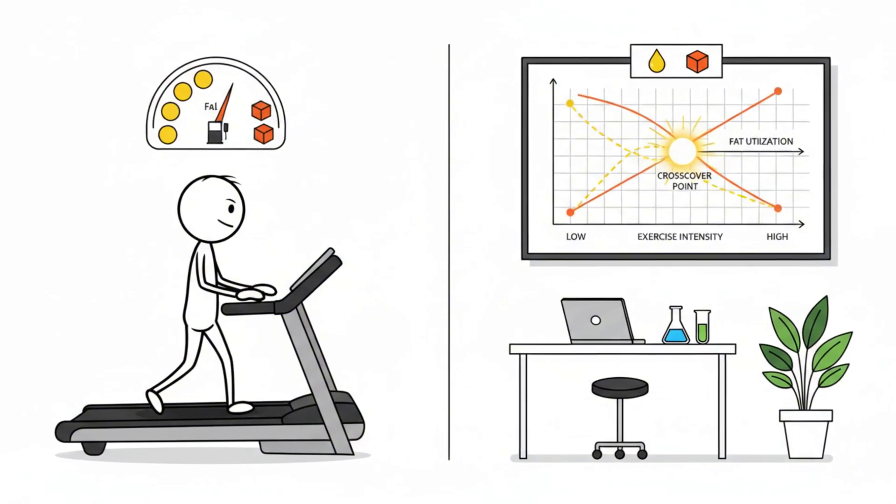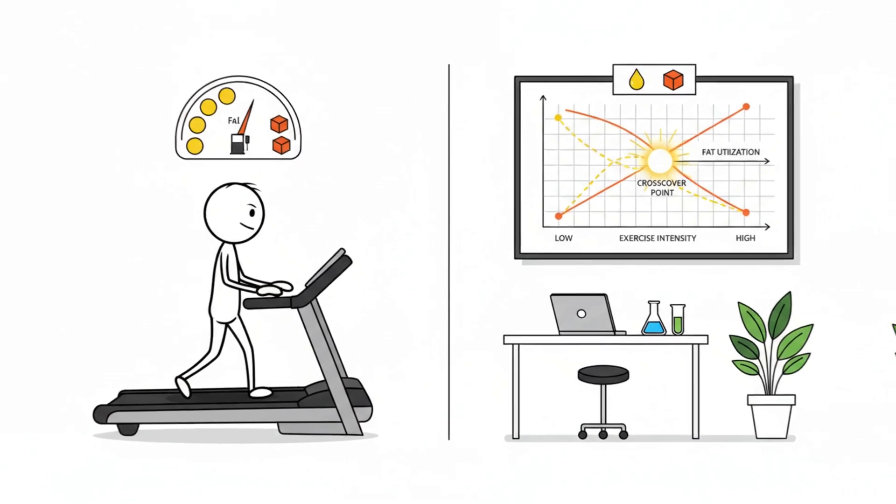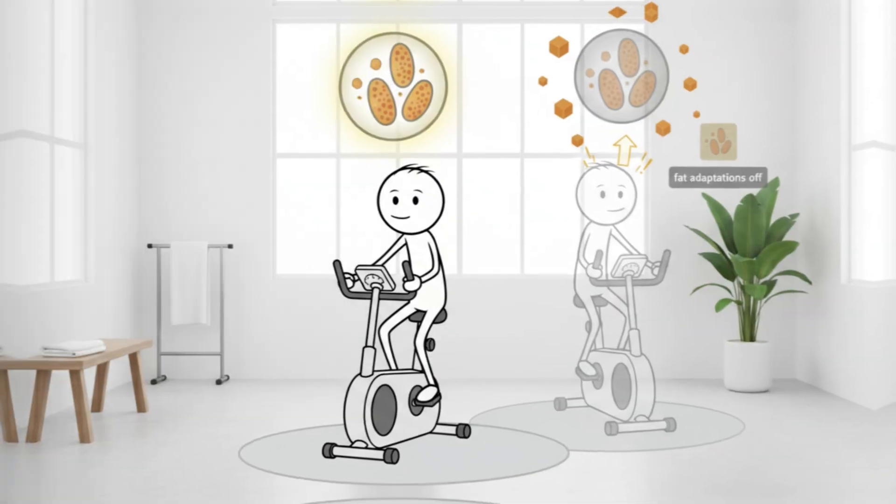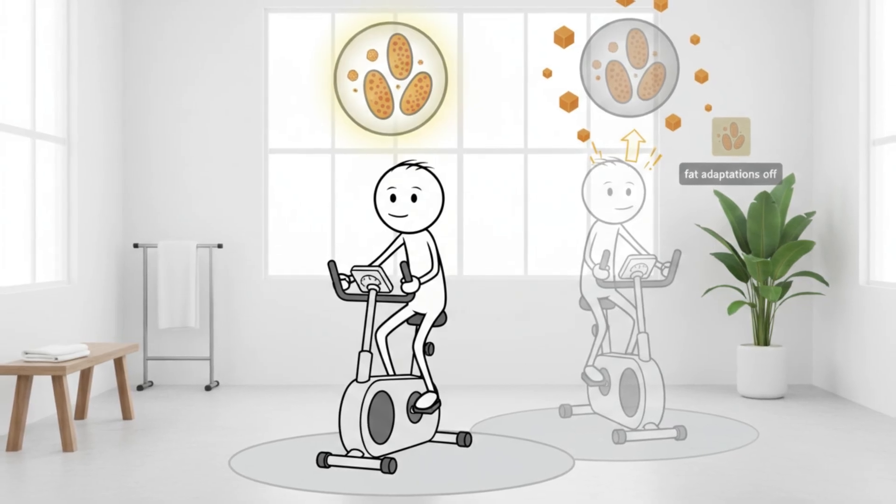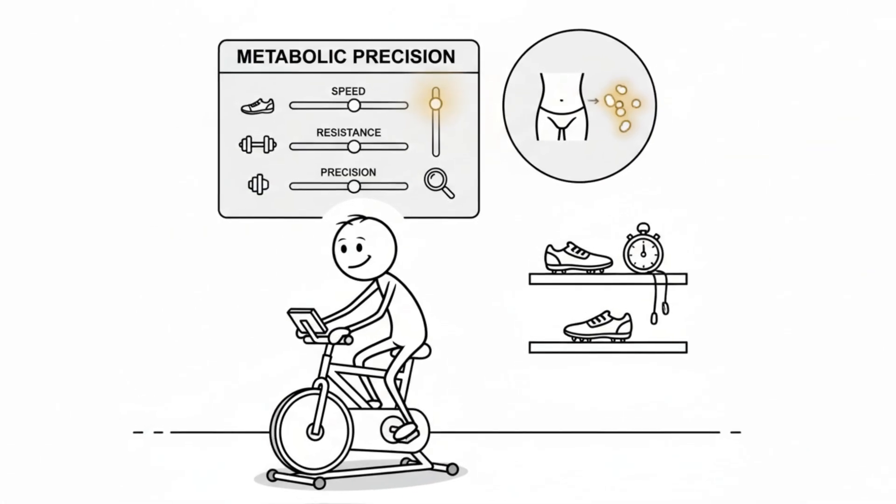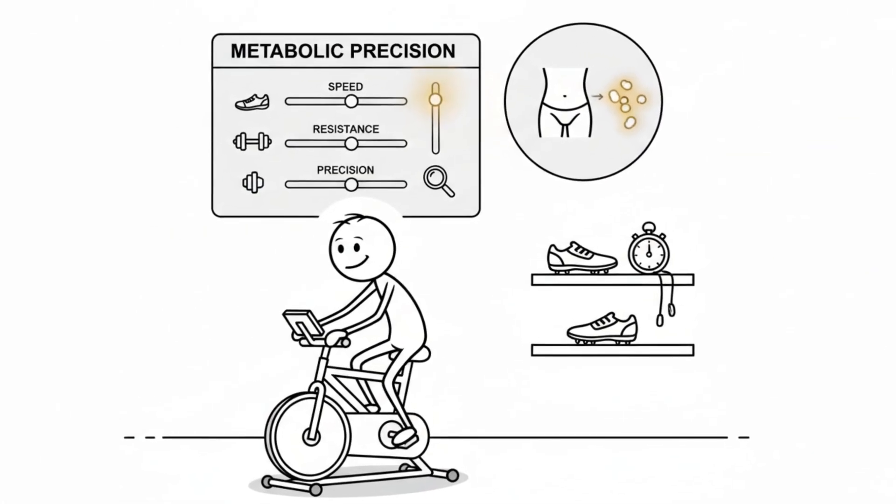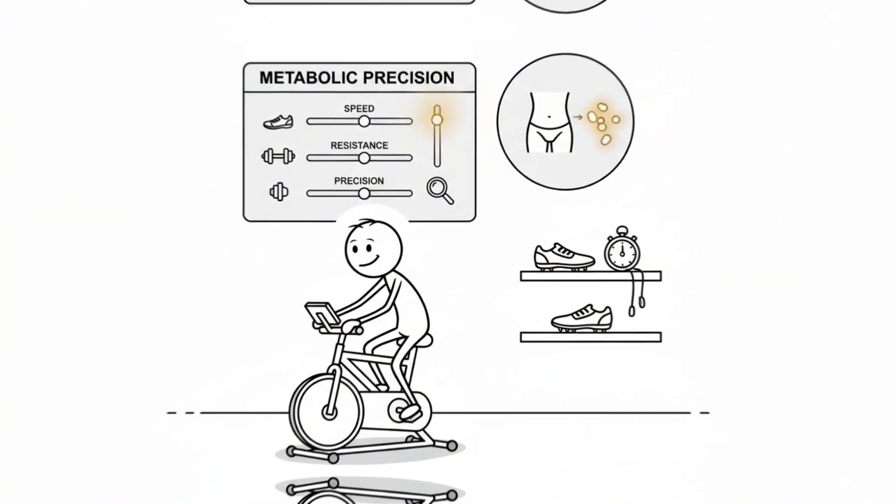Research on metabolic crossover points shows that even small jumps in intensity can dramatically change fuel usage. That means a tiny increase in speed or resistance might feel harmless, yet it shuts down the very adaptations that improve visceral fat metabolism. Your goal is metabolic precision, not speed.